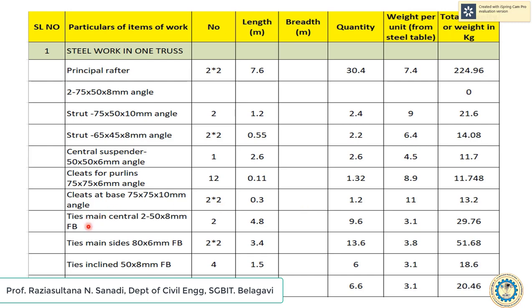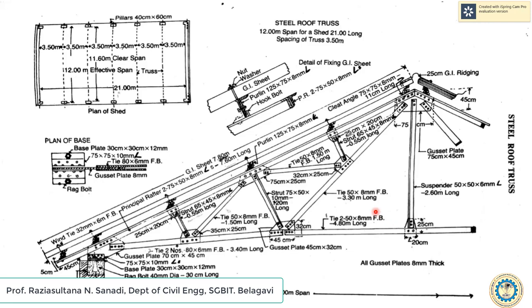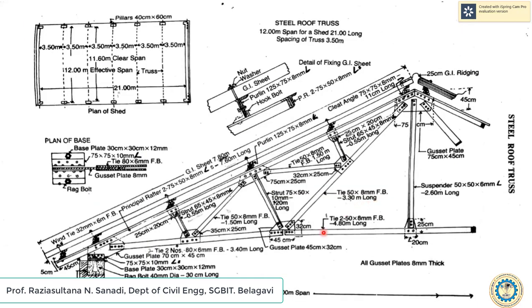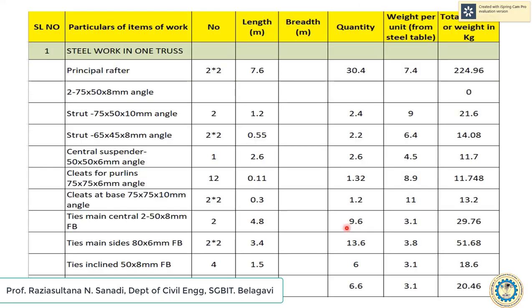Next are ties — flat members. The tie mean central is 50 x 8 mm, 4.8 meters long. The quantity comes to 9.6. The weight per unit for a 50 x 8 mm flat section is 3.1. Multiplying quantity by weight per unit gives a total of 29.76 kg.